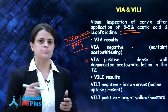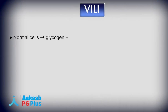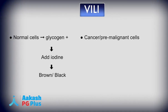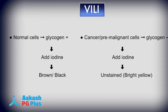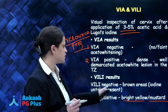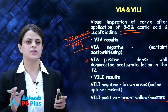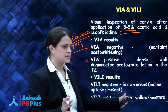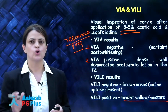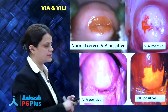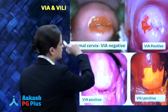Mature normal squamous epithelial cells have a high content of glycogen. Glycogen is stained by iodine to give a brown-black color. However, pre-malignant or malignant rapidly dividing cells do not have any glycogen stores, so they do not take up the iodine and appear bright yellow-mustard in color. A VILI negative region is brown, and a VILI positive lesion is Schiller iodine negative — it does not take up iodine and appears bright yellow or mustard in color.